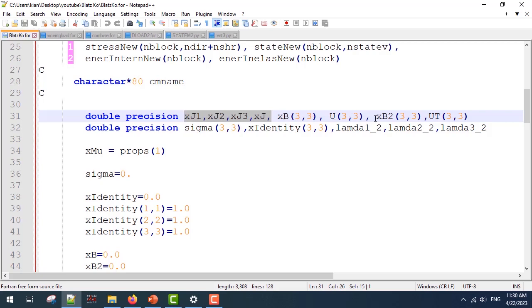Xb, u, Xb2, ut are going to be used to obtain the b matrix. Sigma, X-identity, lambda1, lambda2, lambda3 are going to be used to obtain the stress matrix.